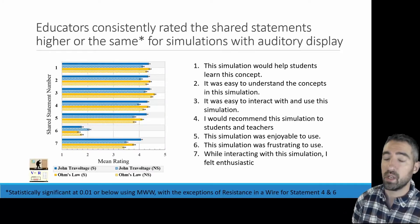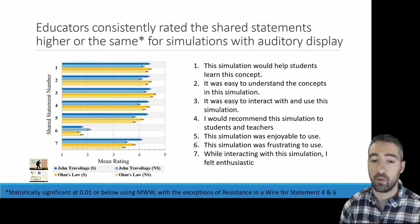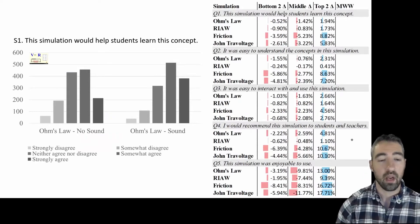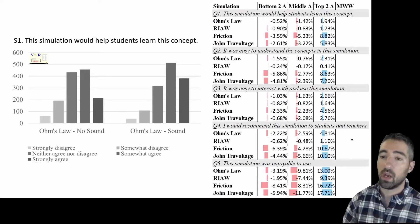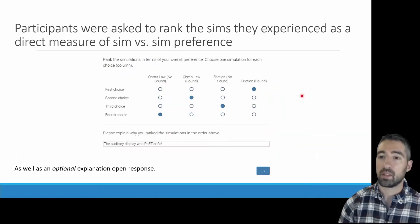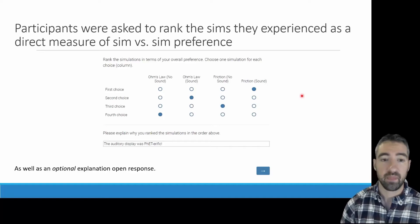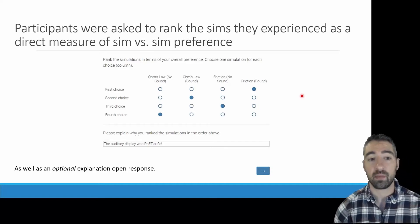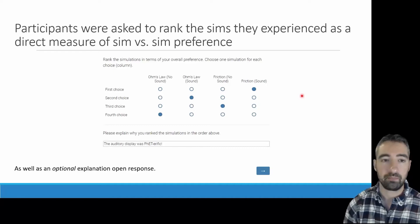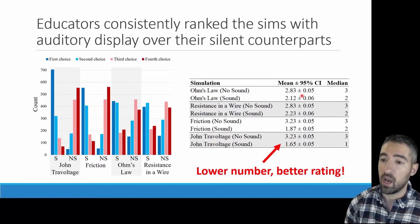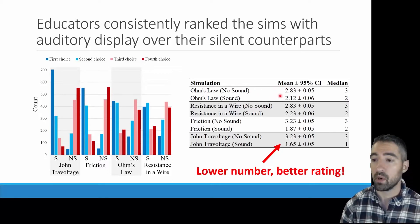Educators consistently rated the shared statements higher or the same for simulations with auditory display. This was true for all save for Resistance in a Wire for Statement 4, related to their recommendation, as well as Statement 6, related to frustration in use. Here's an example of the distribution for Statement 1 and a table to illustrate that between the sound and no-sound variants, we did see a decrease in lower ratings and an increase in the top two ratings. Participants were also asked to rank the SIMs they experienced as a direct measure of SIM versus SIM preference, along with an optional open response.